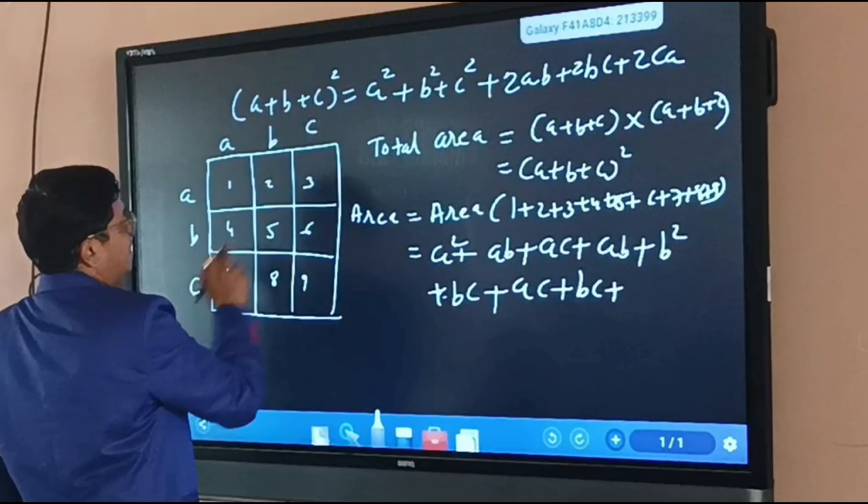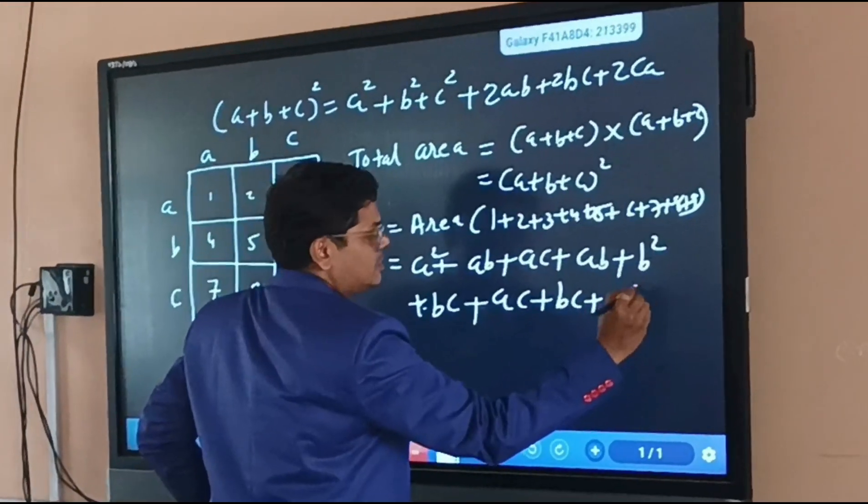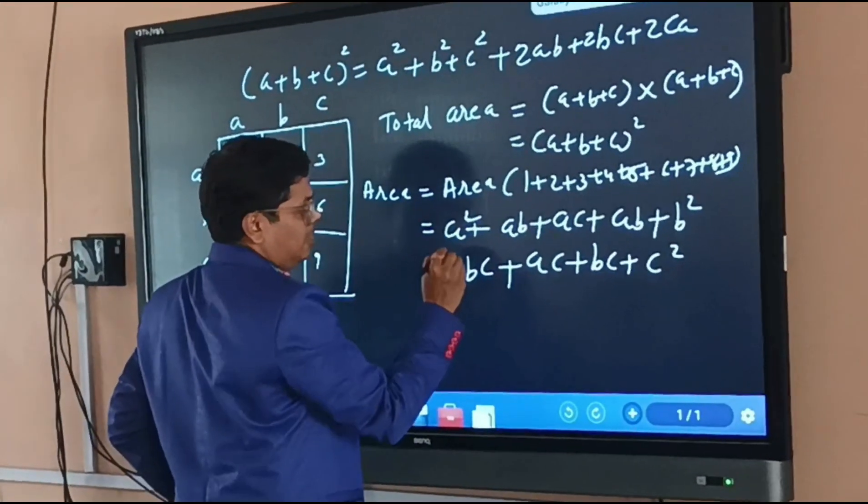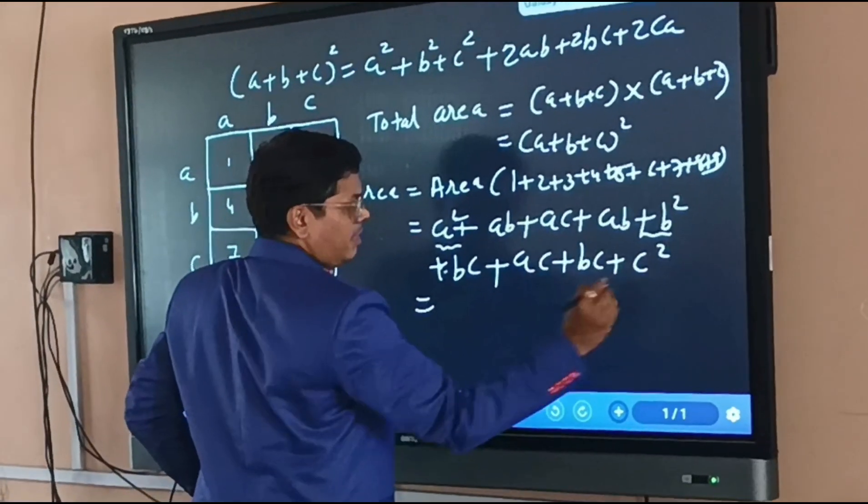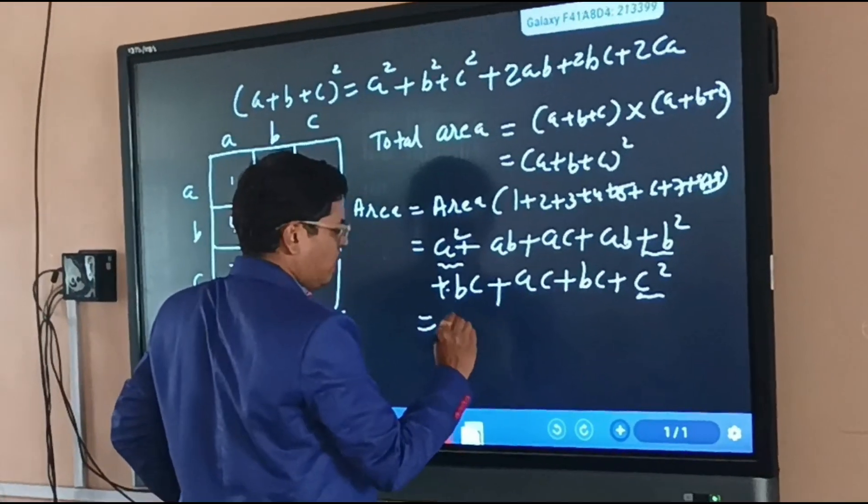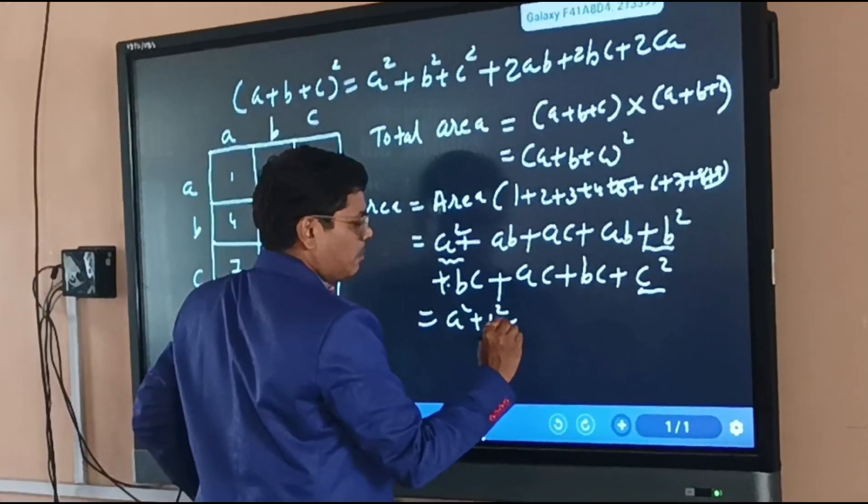And the last, the ninth part, that is c into c, that is c squared. So we will write, we will group a squared, b squared, and c squared together. So a squared plus b squared plus c squared.